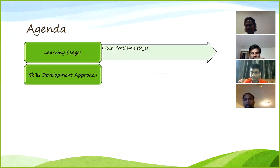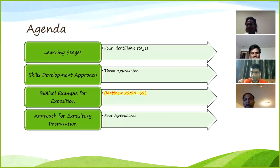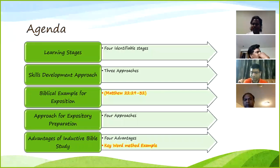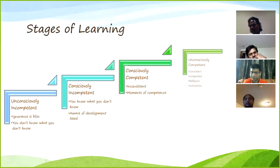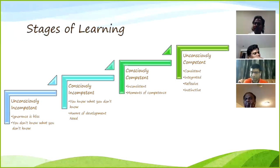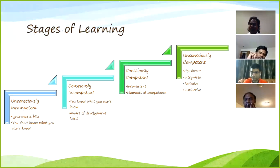My preferred approach is always expository preaching. Even when I deliver a topical sermon, I pick a passage that speaks to that occasion or subject and then expose the passage. That's the best approach I can recommend, because thereby we will be more biblical and less error prone. We'll be talking about four different stages of learning. The reason we discuss these stages is that they are very distinctly observable, and at every stage you can assess yourself as to where you are.